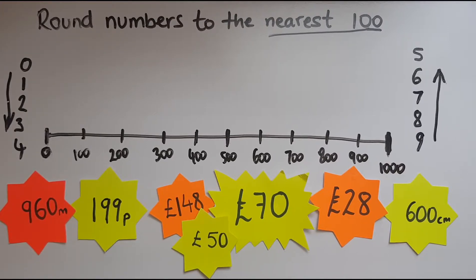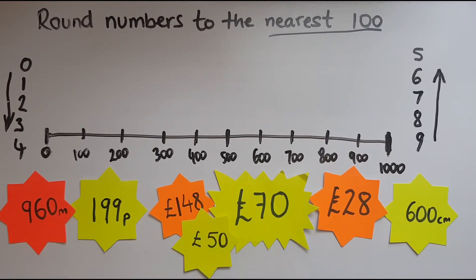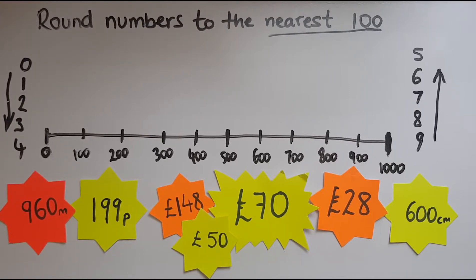What I'm going to be doing here is placing these numbers — amounts, whatever you want to call them — because you've got different units: pounds, pence, meters, centimeters. The unit does not matter; you're still rounding in exactly the same way. So I'm going to try and place them on the number line.